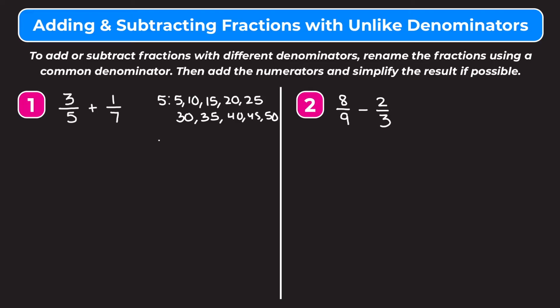Now I'm going to write down some multiples of 7 until I get to one that's also a multiple of 5. So I have 7, 14, 21, 28, 35 — and we'll notice that 35 is also a multiple of 5, so that is the least common multiple of 7 and 5. So we want to change the denominators of each fraction to 35.